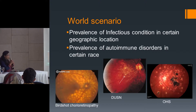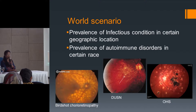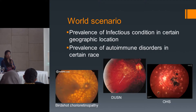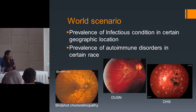For example, birdshot chorioretinopathy is predominantly a disease of white people due to genetic causes. Whereas other conditions like VKH — Vogt-Koyanagi-Harada's disease — are diseases of race. More pigmented people have that disease, whereas less pigmented people don't. VKH is very common in Nepal and Japan — Japan has the highest numbers — and also in South America among Hispanic people.